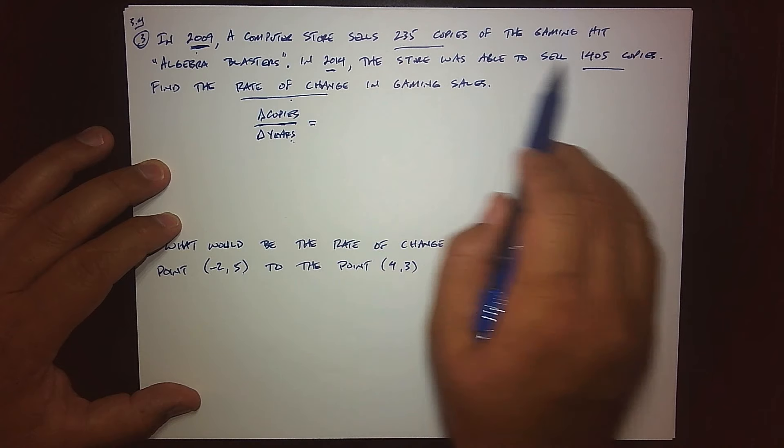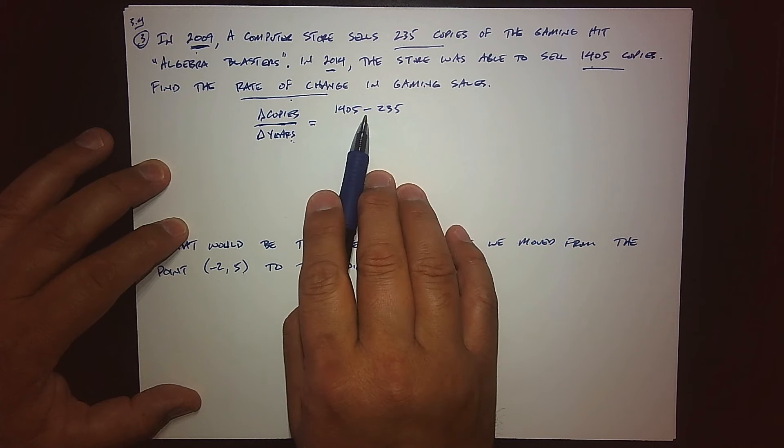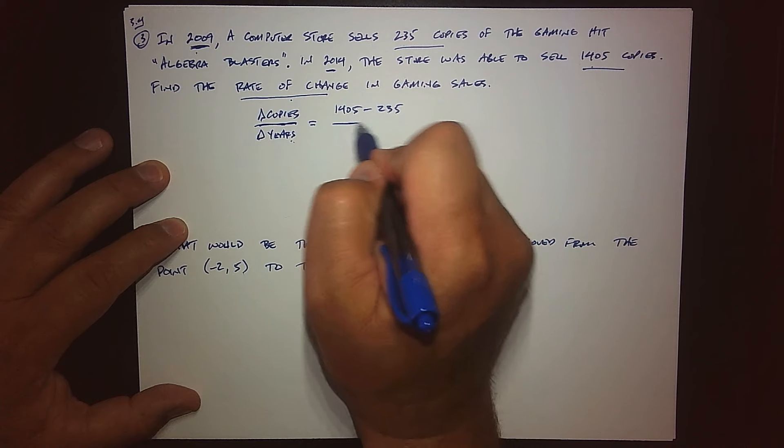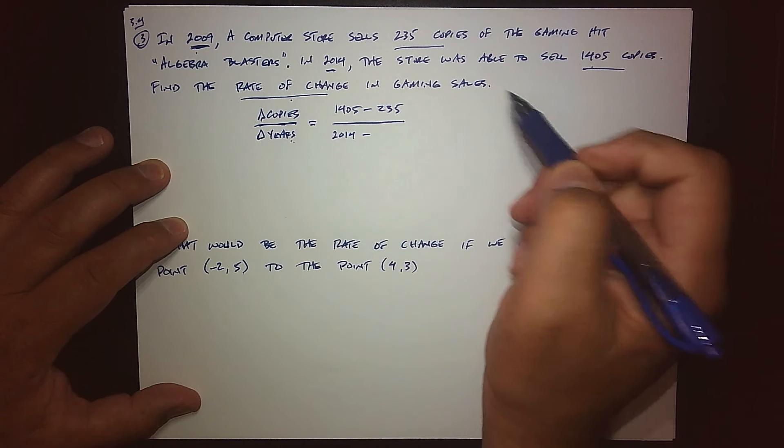So what we have basically then is a change in copies per change in years, otherwise known as copies per year. So there's basically our rate. We've identified it. We're starting to set up the word problem. So what's next? Well, let's go figure this stuff out. So how do I find the change in copies? We started with 235 and we had 1,405 more.